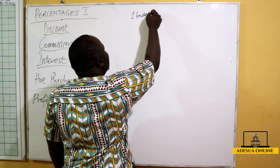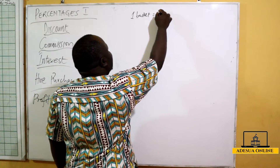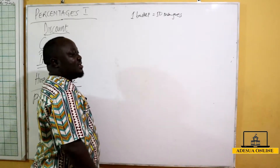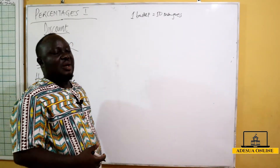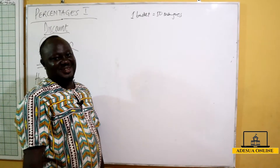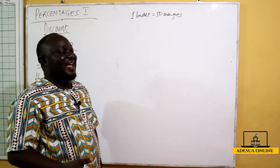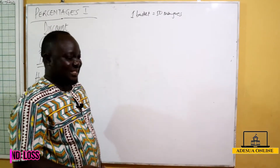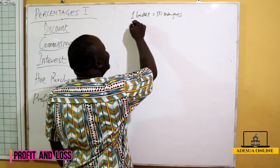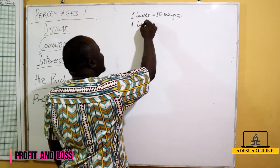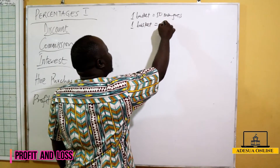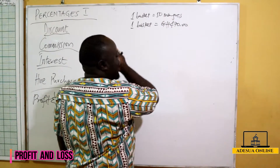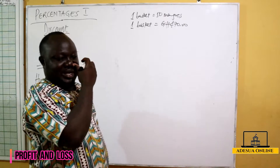We are saying one basket has 50 mangoes. The seller tells me a basket of mangoes is 70 Ghana cedis. So one basket is equal to 70 Ghana cedis. I told the seller okay, fine, I'll buy it.